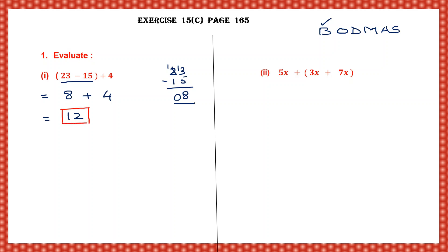Now let's write the second expression term as it is, that is 4. Now 8 plus 4 is 12. So our answer here is 12. That's the answer to the first question. Let's move on to the second one. Again we have brackets, so that has to be done first. We'll work out what's within brackets. So the first term remains as it is. So 5x plus, now 3x plus 7x. 3 plus 7 is 10, so that is 10x. So 5 plus 10 is 15x. So the answer to our second question is 15x.